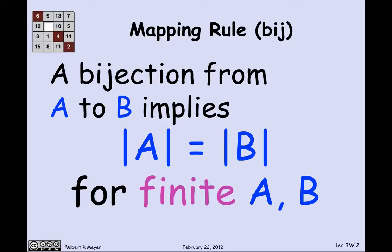By the way, those vertical bars — absolute value of A — when applied to a set, refers to the size of the set for finite sets. So if A has n elements, then the absolute value of A is n.